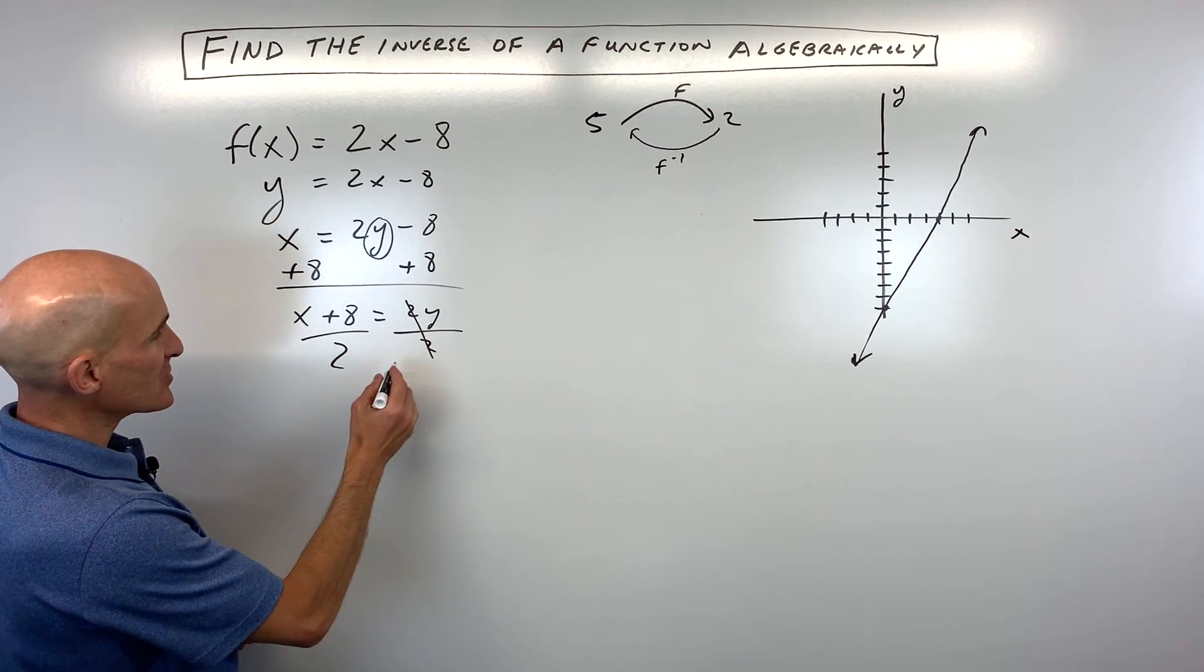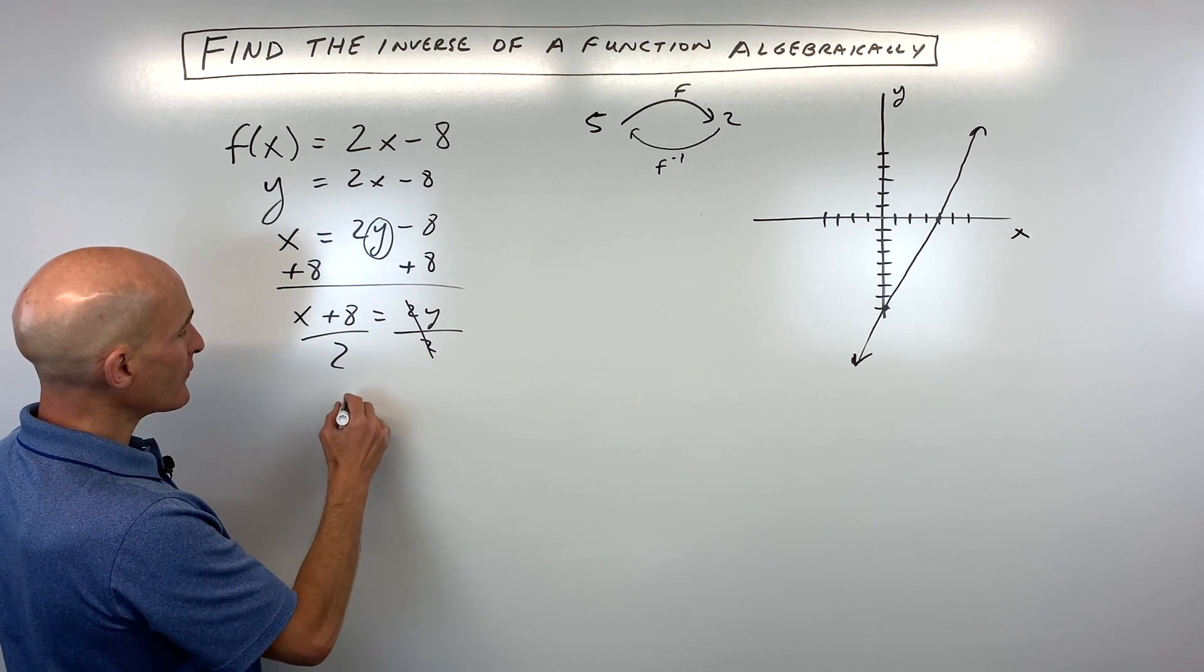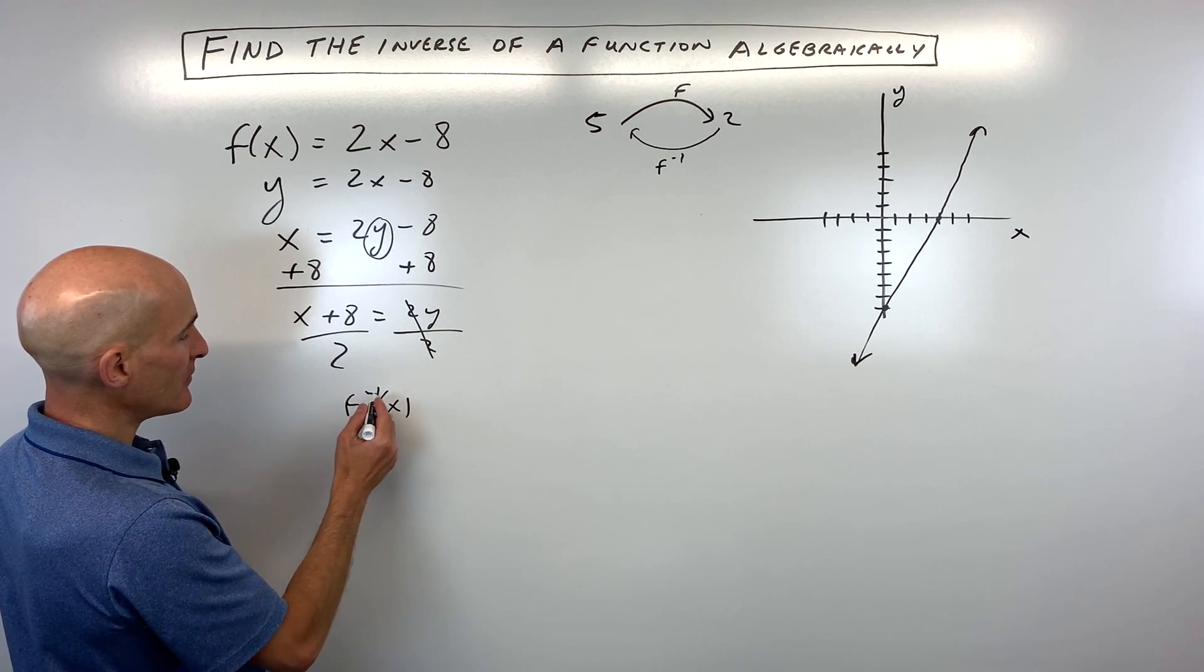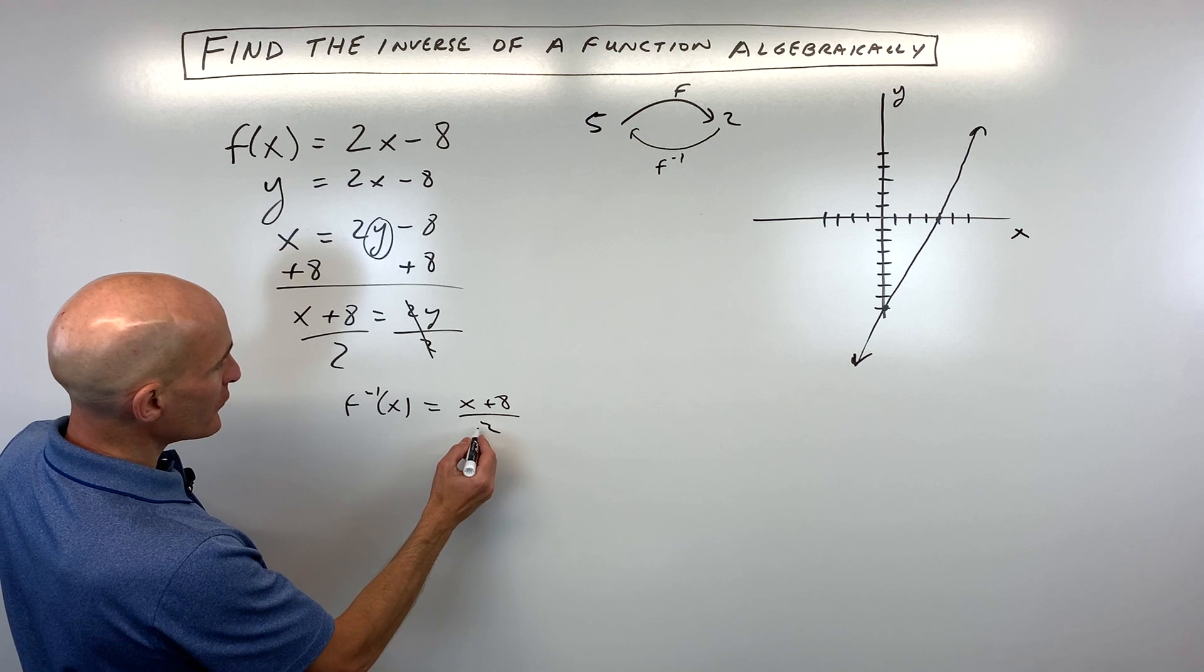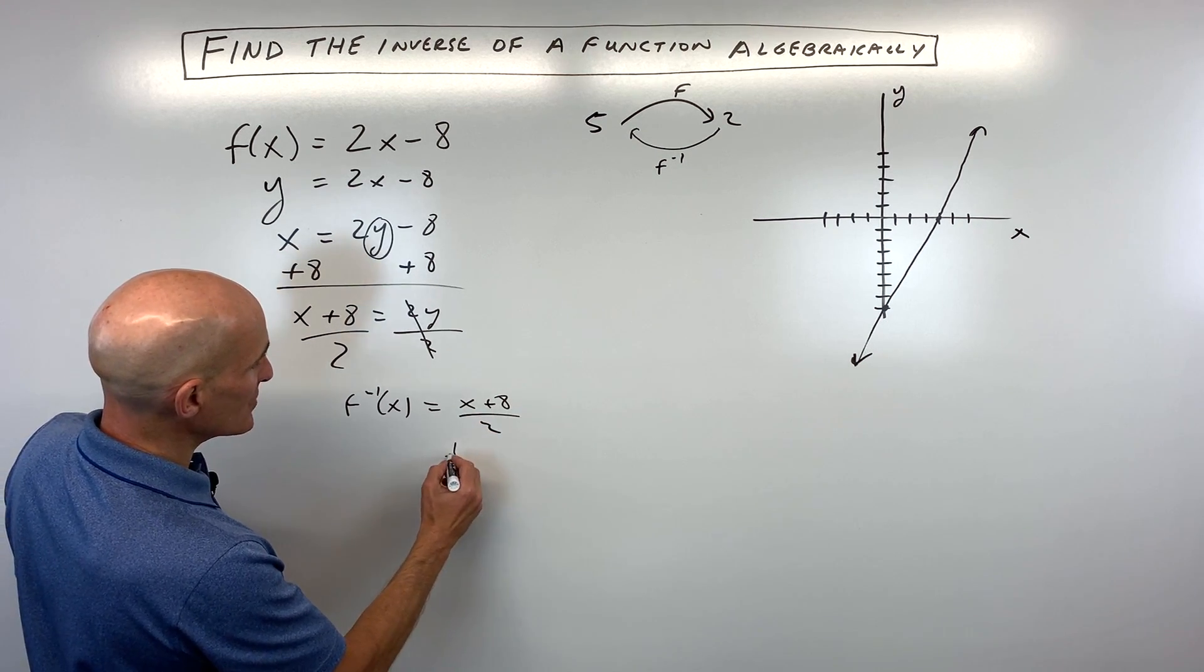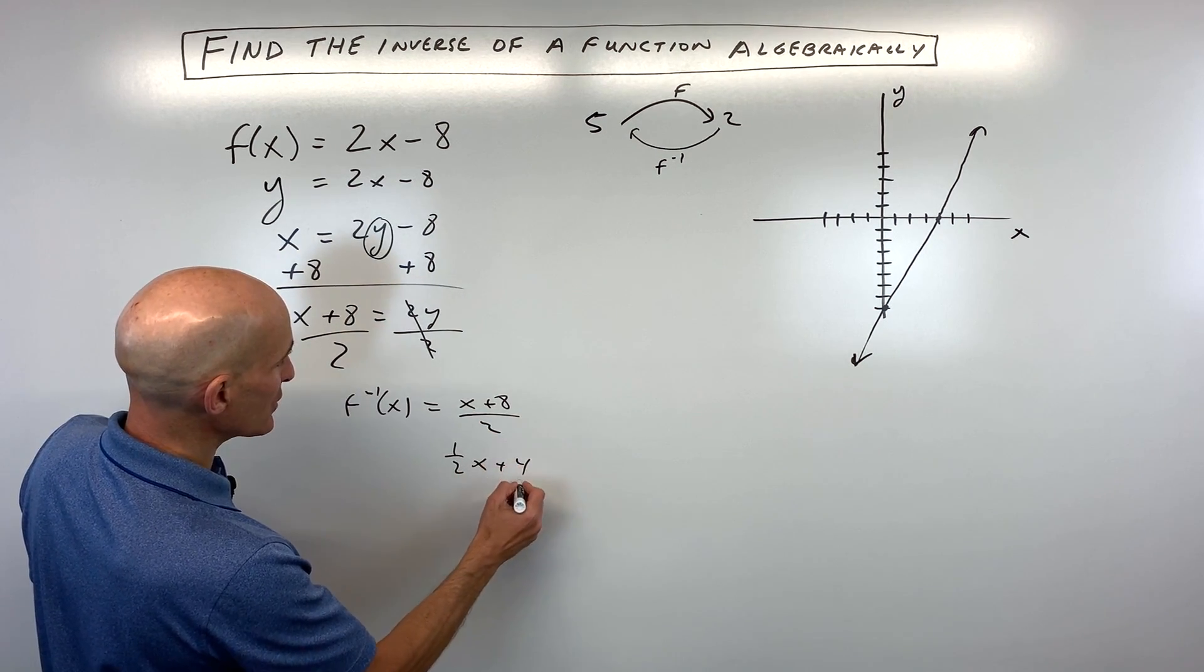Do it to both sides. So now we have y equals, or if you want, you can use this inverse notation, f inverse of x equals x plus 8 over 2. Or if you want, you can divide these both by 2 and say this is 1 half x plus 4.